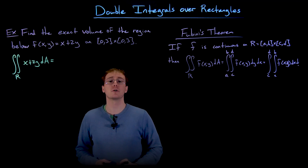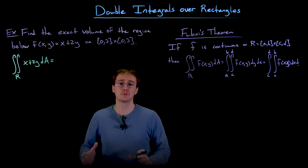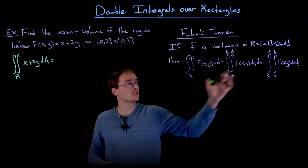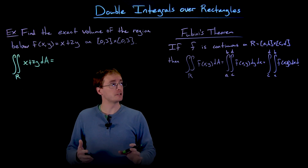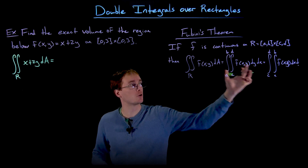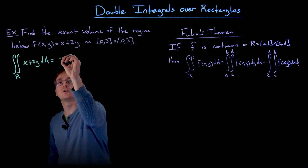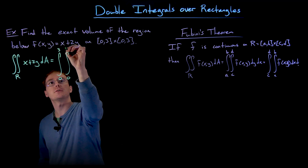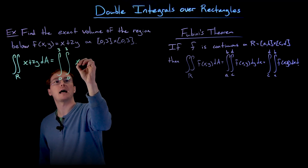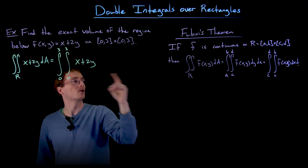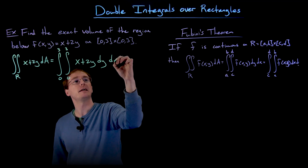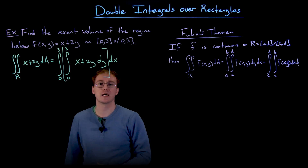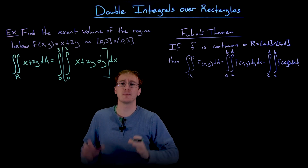In some examples the order of integration may make antiderivatives easier or harder to find. Let's first evaluate the double integral using the iterated integral where we integrate with respect to y first, then with respect to x. We write this as the integral from 0 to 3 of the integral from 0 to 3 of x + 2y, dy dx. We put brackets around the inner integral to help stay focused.